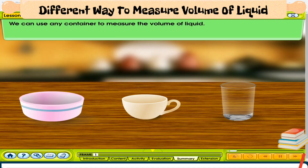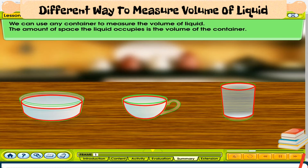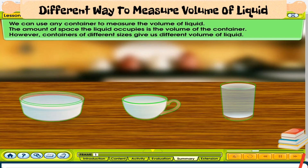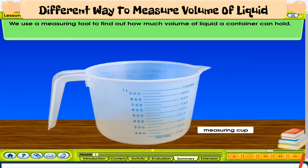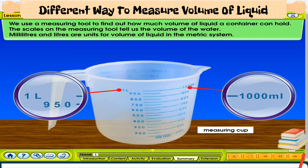We can use any container to measure the volume of liquid. The amount of space the liquid occupies is the volume of the container. However, containers of different sizes give us different volumes of liquid. We use a measuring tool to find out how much volume of liquid a container can hold. The scales on the measuring tool tell us the volume of the water.